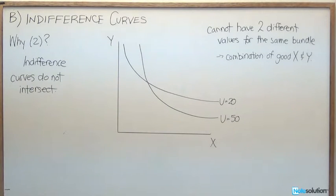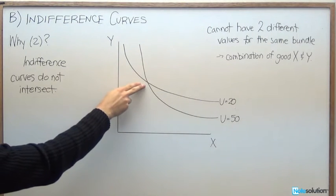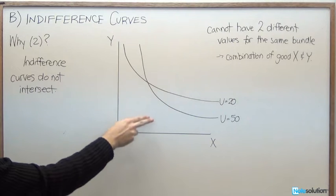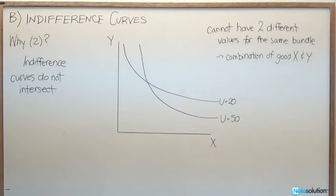So what does that mean? If we had 3 units of good Y and 5 units of good X, then at this point it's going to simultaneously give us a value of 20 and 50. Well, that doesn't really make any sense. So let's think about it.